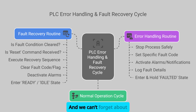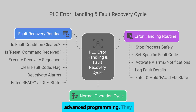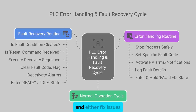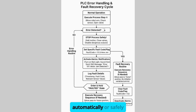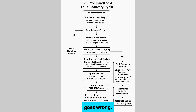And we can't forget about error handling and fault recovery routines. These are crucial in advanced programming. They help detect problems, log important data, and either fix issues automatically or safely shut down the system while alerting the operators. It's all about keeping things running smoothly and safely, even when something goes wrong.